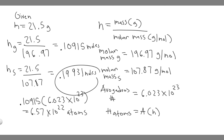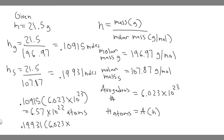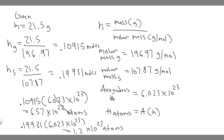Now for silver: 0.19931 multiplied by 6.023 times 10 to the 23 gives us 1.2 times 10 to the 23 atoms. So this is the number of atoms in the silver ring, and the previous result was for gold.